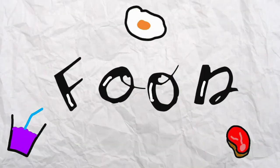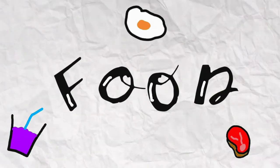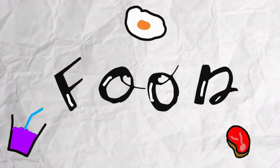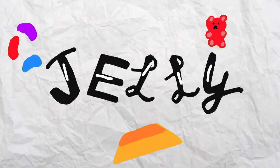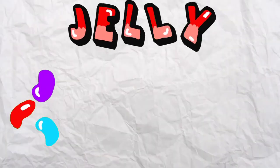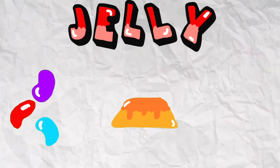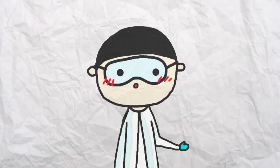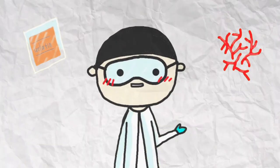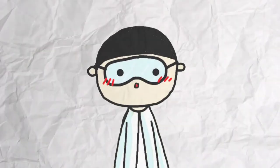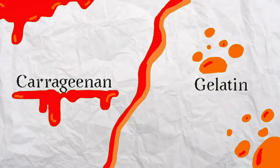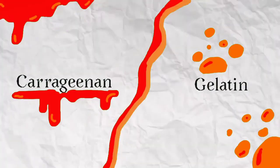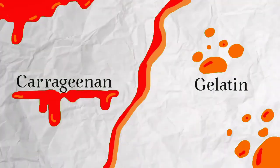Hello everybody, in this video we will talk about food — more precisely, jelly. I assume most of you already know about jelly: it can be jelly beans, it can be pudding, it can be gummy bears, or many more. But did you know that different ingredients may result in different properties? Here we want to talk about carrageenan and gelatin and how those ingredients make jelly.